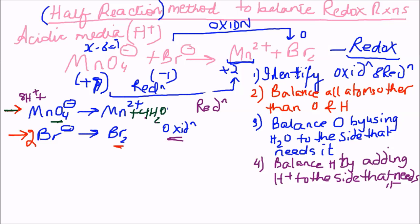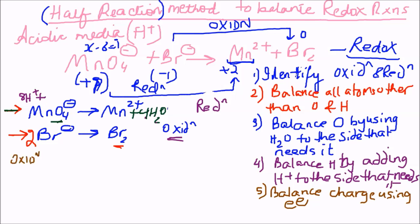The fifth step is to balance charge using electrons. For the oxidation half, I have two bromides giving two negative charges. To balance, I add two electrons to the right-hand side: 2Br⁻ → Br2 + 2e⁻.